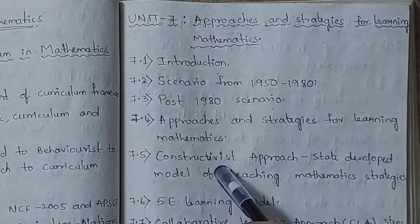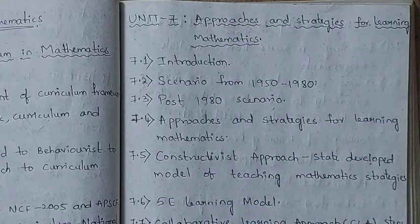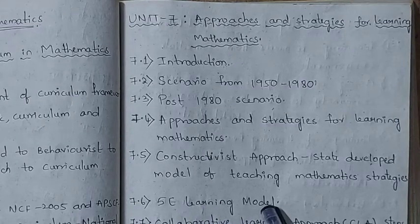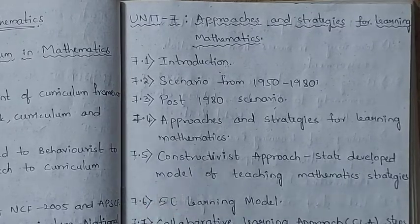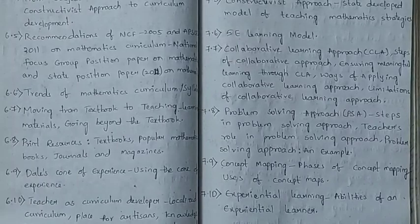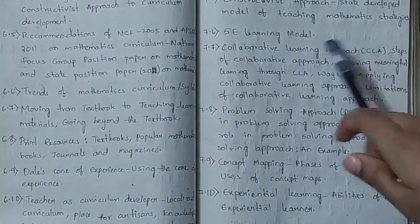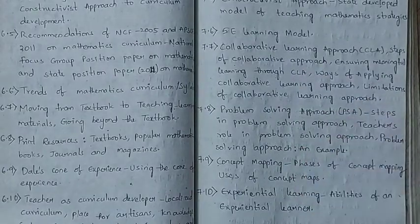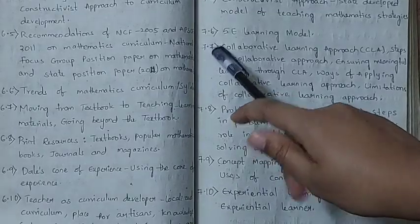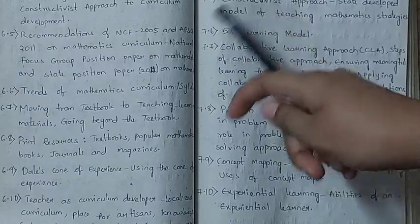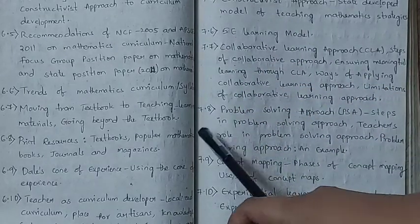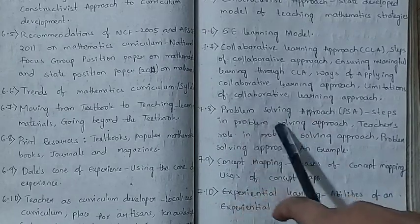In 7.5 we look at the constructivist approach — the state-developed model of teaching mathematics strategies, how it was developed. In 7.6 we look at the 5E learning model. In 7.7 we look at collaborative learning approach (CLA) — its steps, meaning, how to apply it, and its limitations. Collaborative learning approach is very important because it is student-centered and very beneficial.